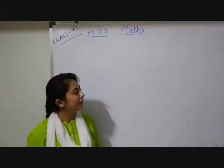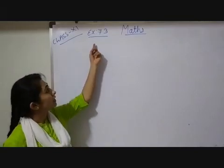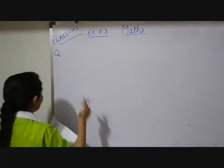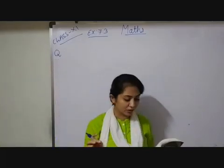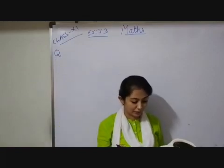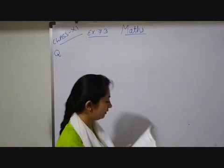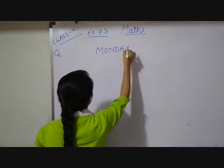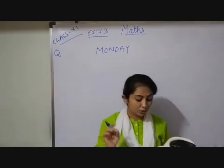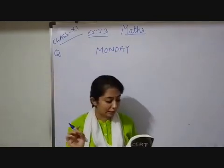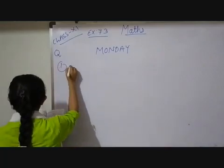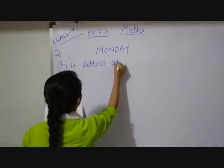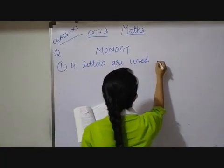Hello children. In this video I will discuss two questions of exercise 7.3. The first one is: how many words, with or without meaning, can be made from the letters of the word MANDI, assuming that no letter is repeated, if four letters are used at a time?